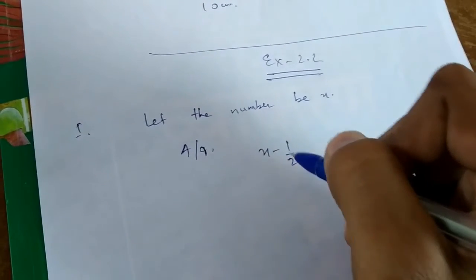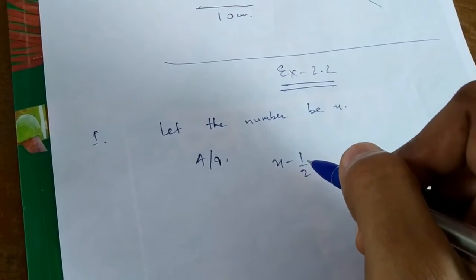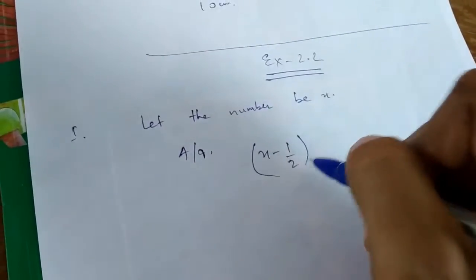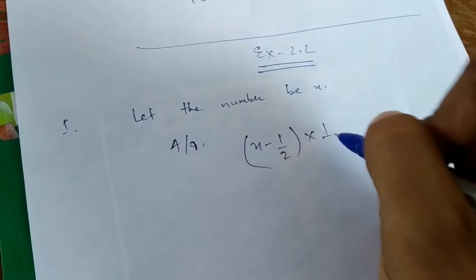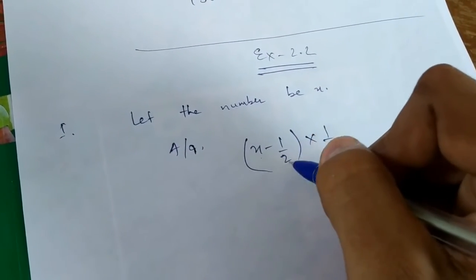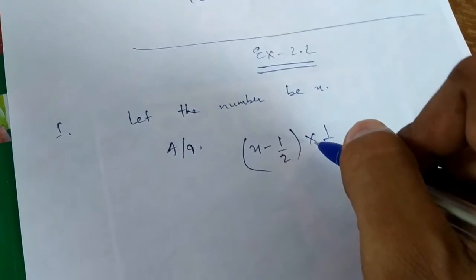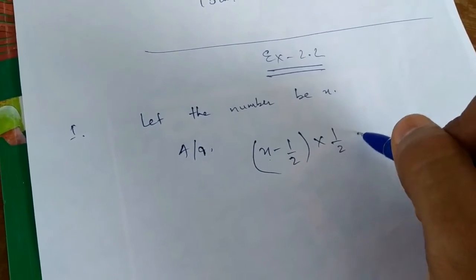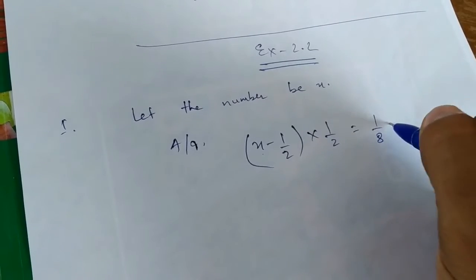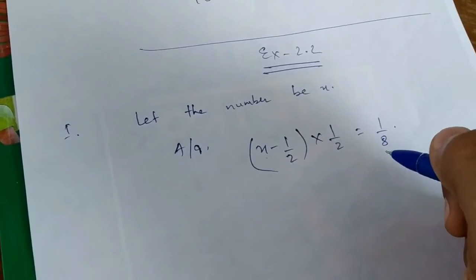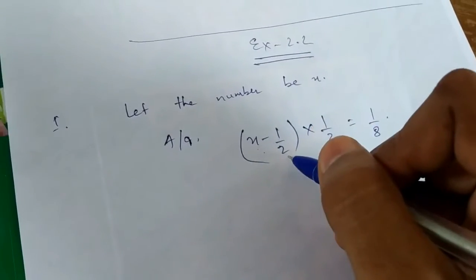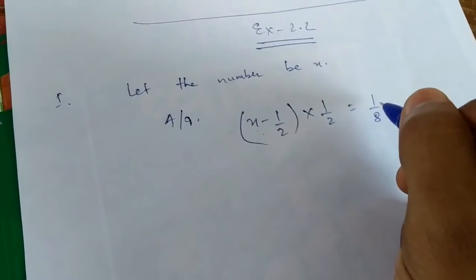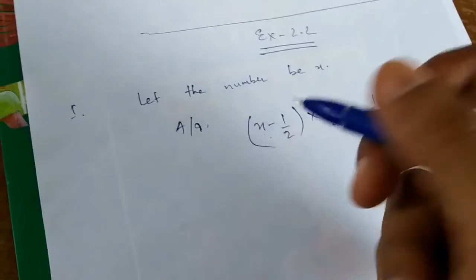According to the question, x minus 1 by 2. We subtract 1 by 2 from x, and multiply the result by 1 by 2. You get 1 by 8. So we subtract 1 by 2 from x and multiply that result by 1 by 2, the answer is 1 by 8.